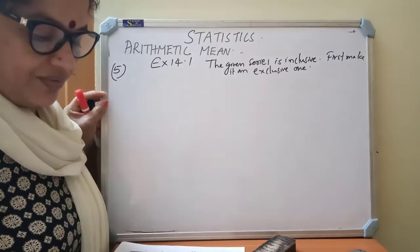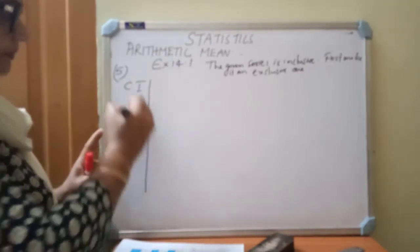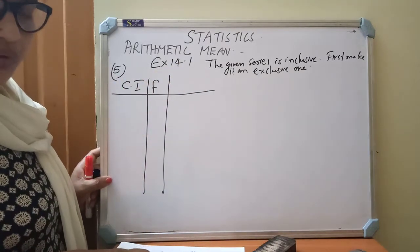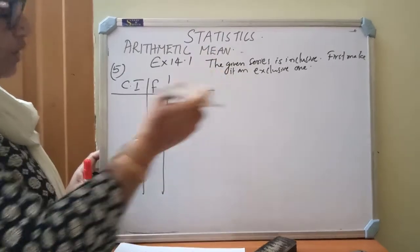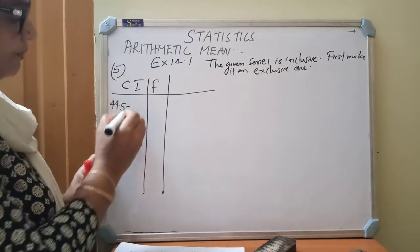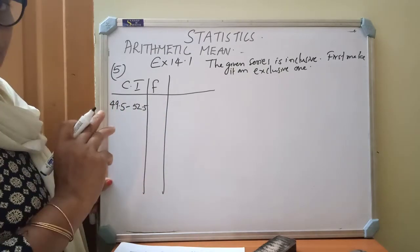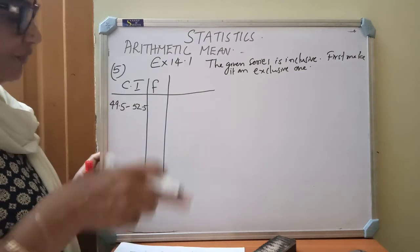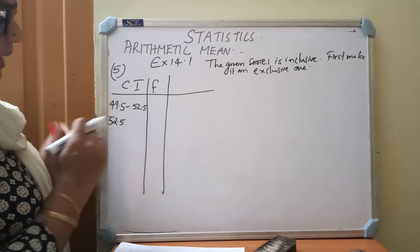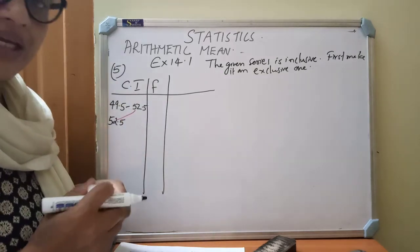The class interval, the given class interval 50 minus 0.5. We will get the first class interval as 49.5. And 52 plus 0.5 is 52.5. Upper limit plus 0.5, lower limit minus 0.5. So what will be the second class? 53 minus 0.5 is 52.5. See that the upper limit of the first class and the lower limit of the second class are equal.